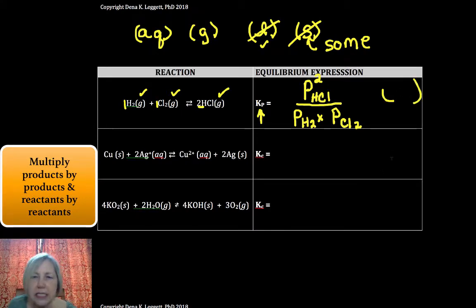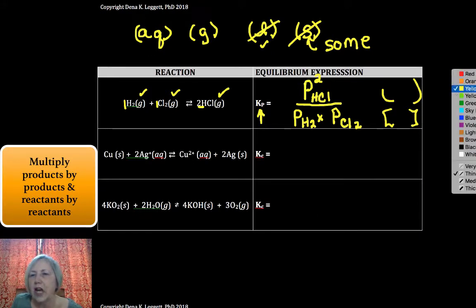And since there's an implied one there, those are both to the first power. Now if you put parentheses around those, you'd be fine. But do not, do not, do not use square brackets. Square brackets communicate molarity.